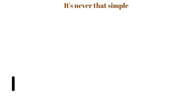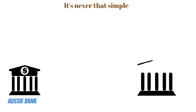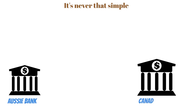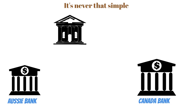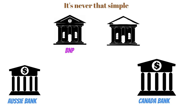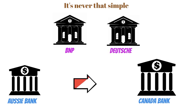But life is never that simple. What if a customer wants to send non-native funds, like sending euro from Australia to Canada, or funds to a bank their local bank doesn't have as a counterparty? For this we need intermediary banks, standard settlement instructions and two additional SWIFT MT message types.